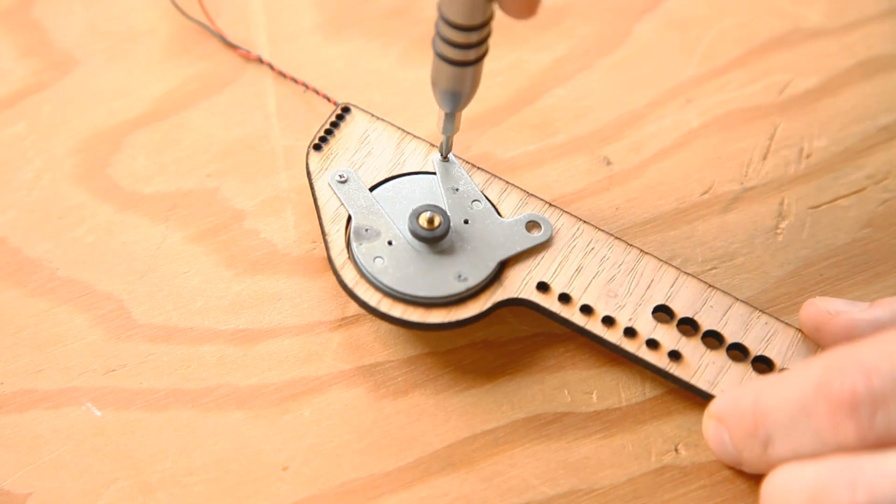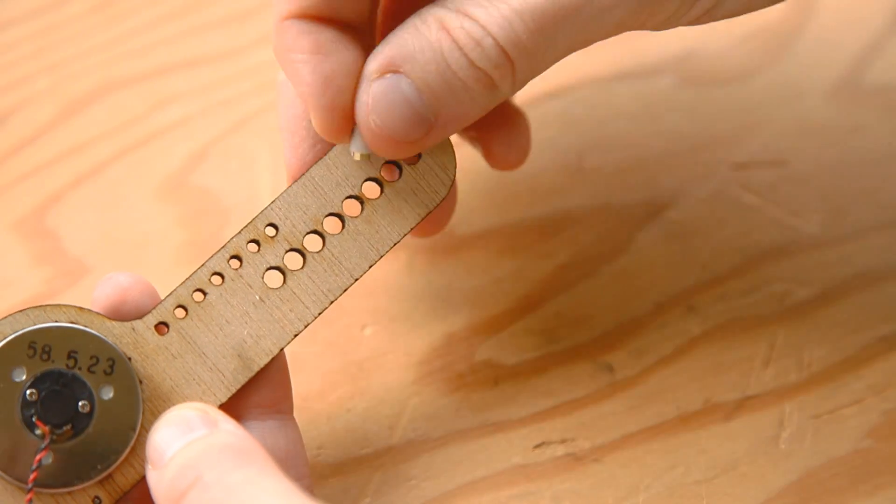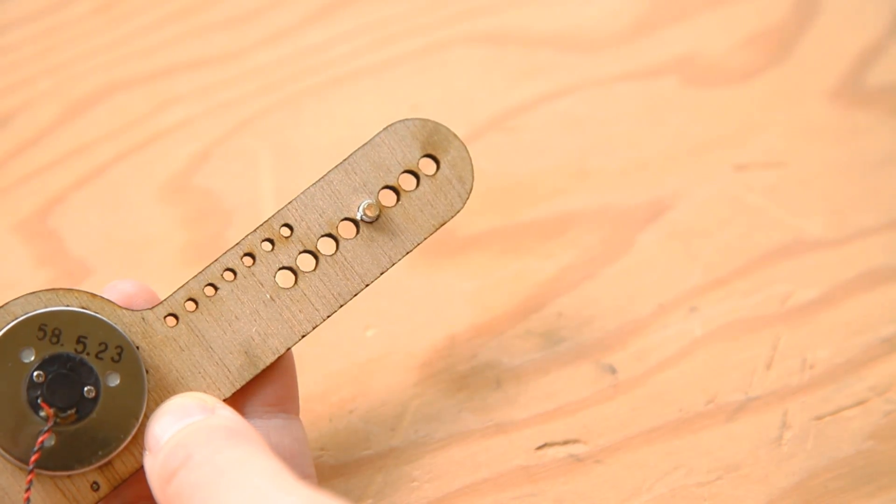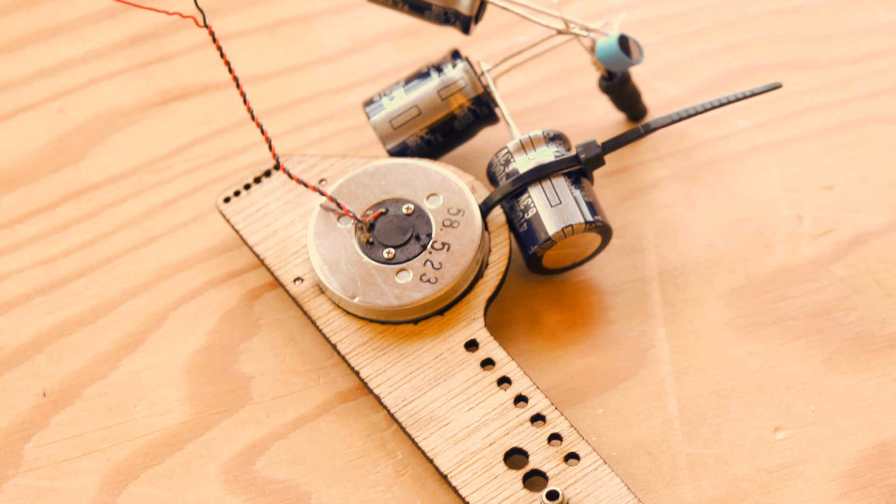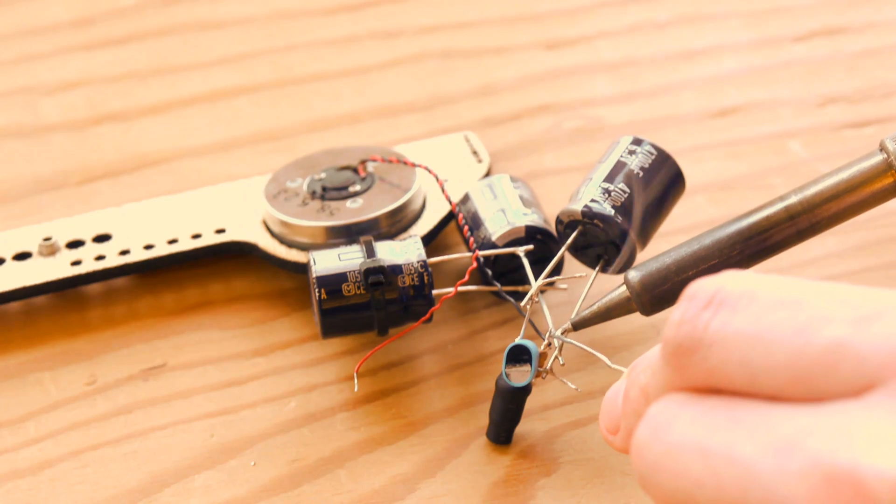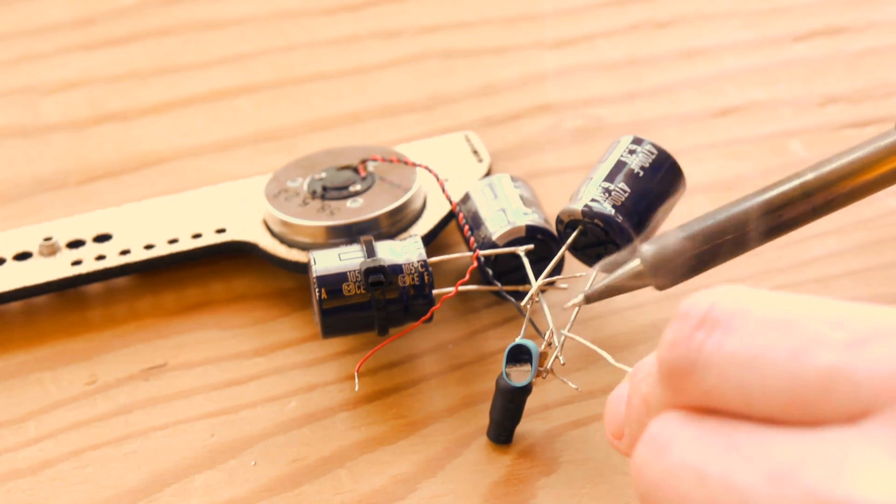Attach the motor to the chariot body. Use a piece of brass tubing and heat shrink to create an axle. The solar engine is attached to the body by small zip ties or scrap pieces of wire. Then solder the motor to the solar engine circuit.